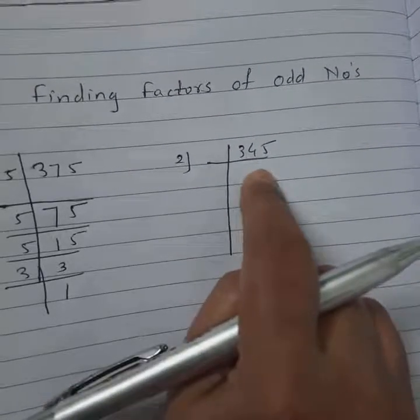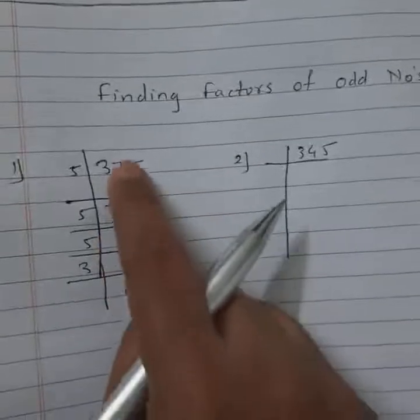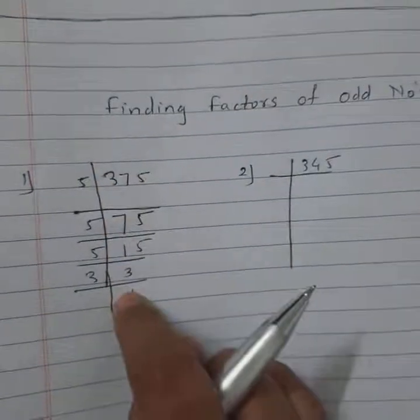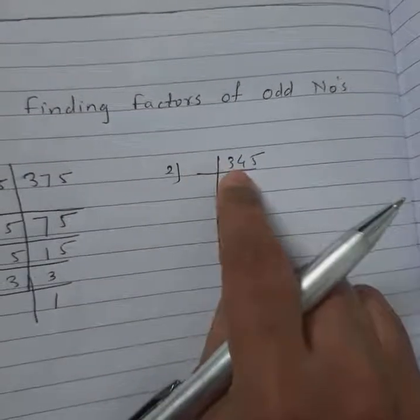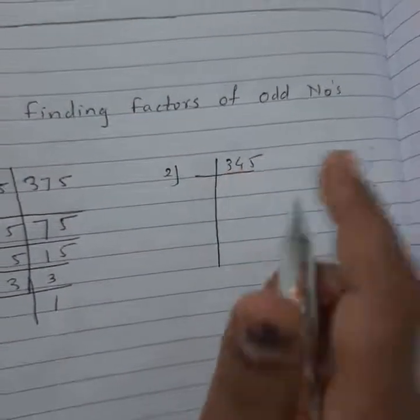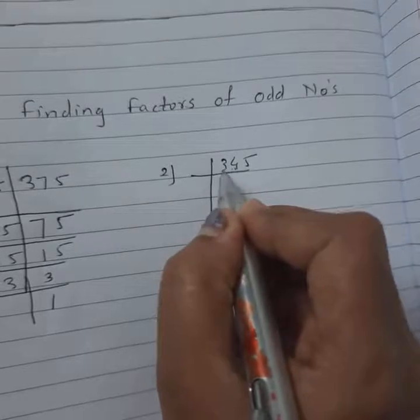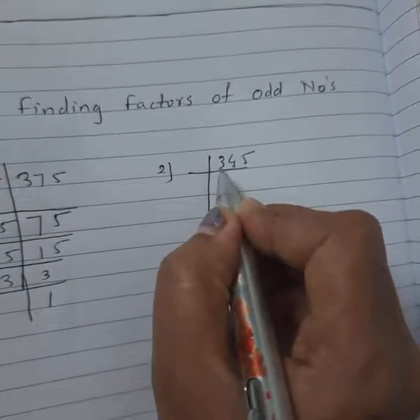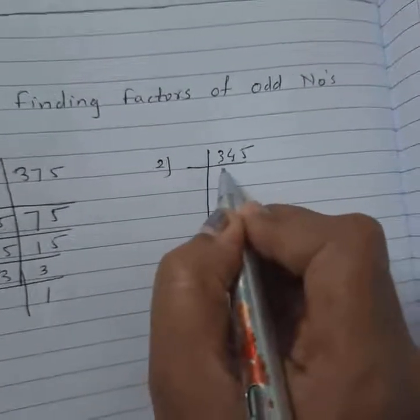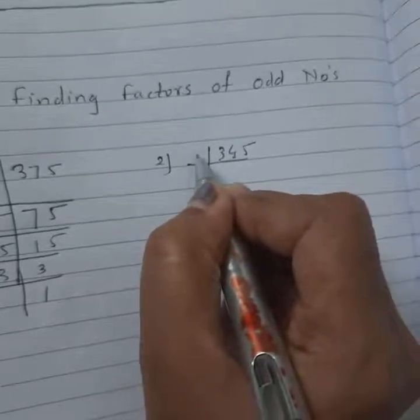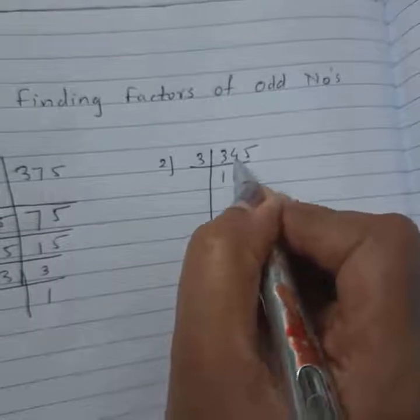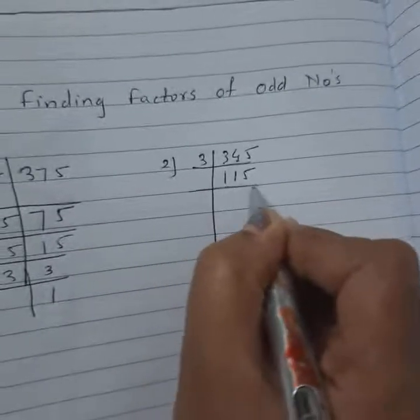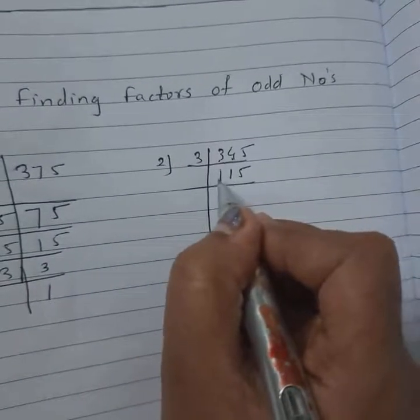Now I use the 3's divisibility rule. 5 plus 4 is 9, and 9 plus 3 is 12. 12 is divisible by 3, so I use divisibility rule of 3. 3 times 1 is 3, remaining 115. 1 plus 1 plus 5 is 7, which is not divisible by 3.